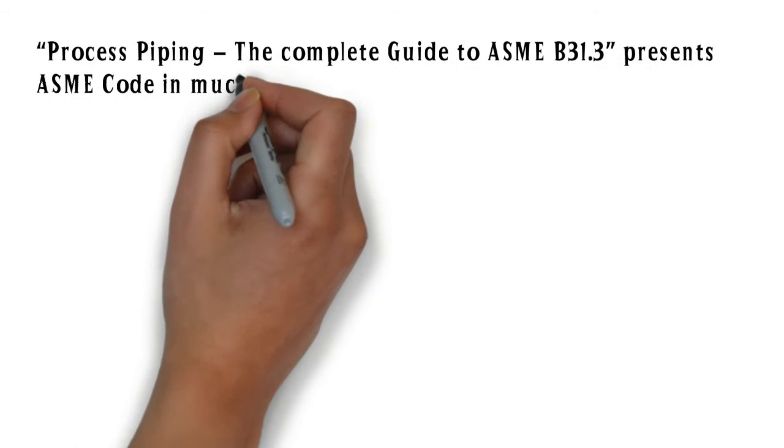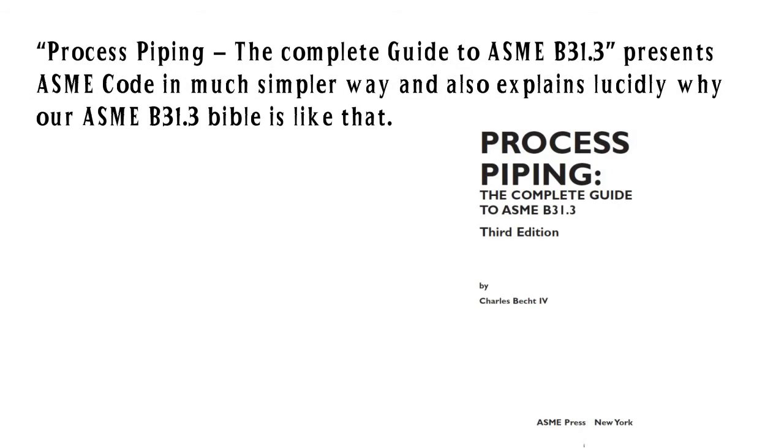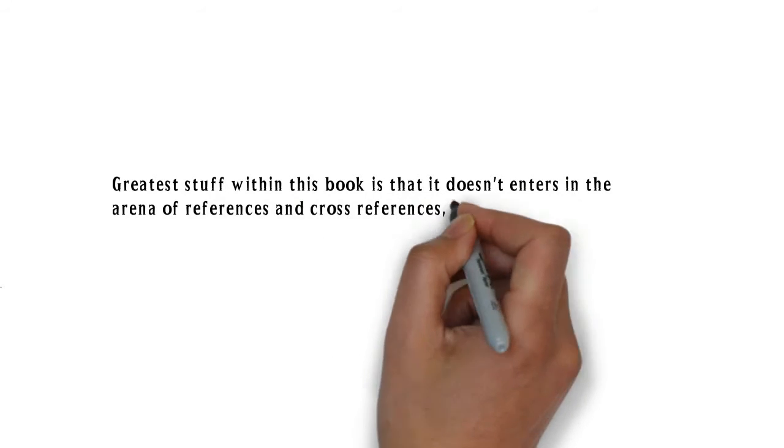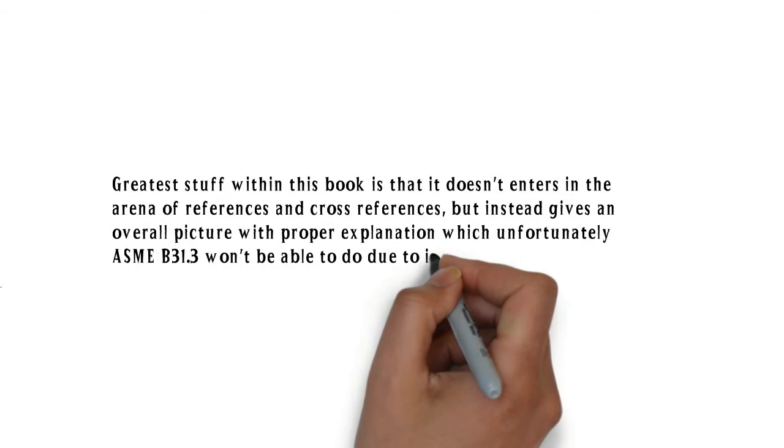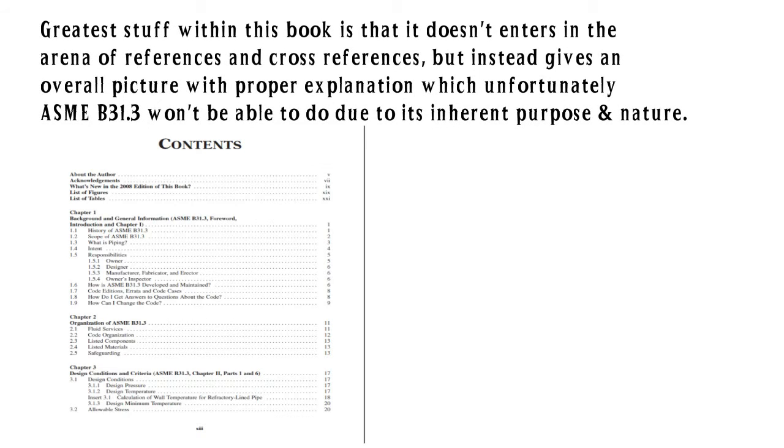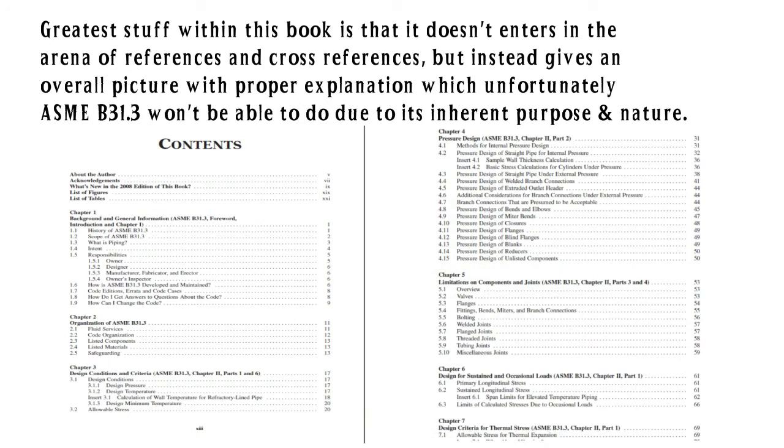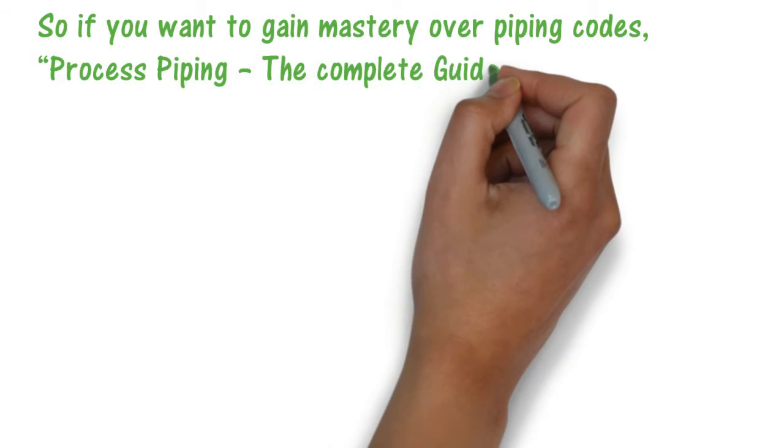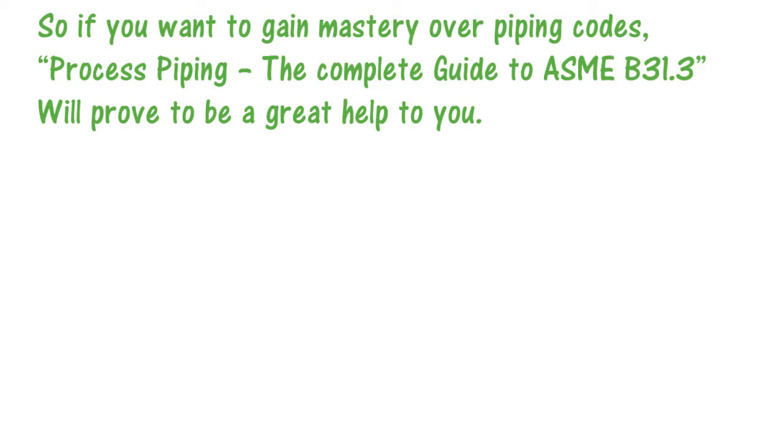Process Piping The Complete Guide to ASME B31.3 presents ASME code in a much simpler way and also explains lucidly why ASME B31.3 is like that, with so many references and cross-references and the nature of the code being like that. The greatest strength within this book is that it doesn't enter into the area of references and cross-references which ASME B31.3 or any code does, but instead gives an overall picture with proper explanation which unfortunately ASME B31.3 won't be able to due to its inherent purpose and nature. So if you want to gain mastery over piping codes, Process Piping The Complete Guide to ASME B31.3 will prove to be a great help to you.